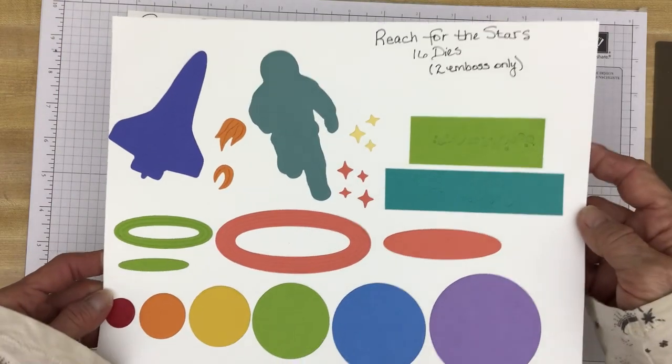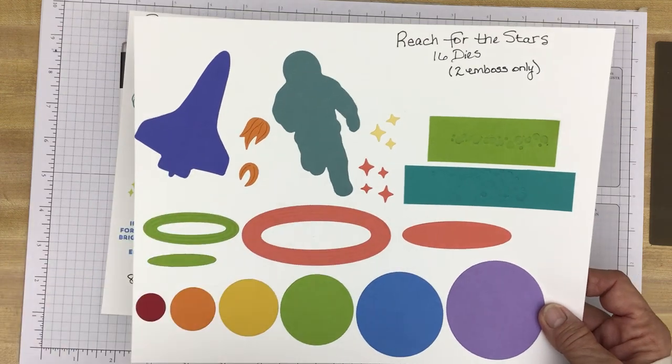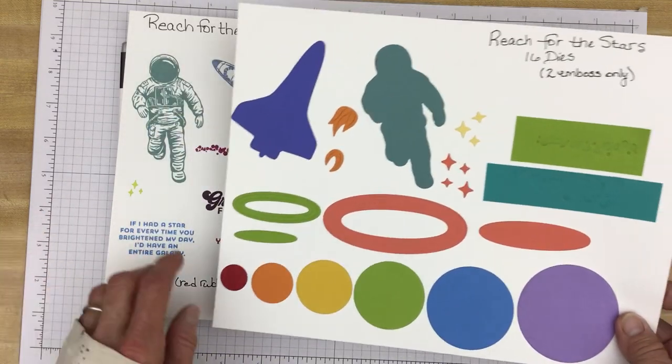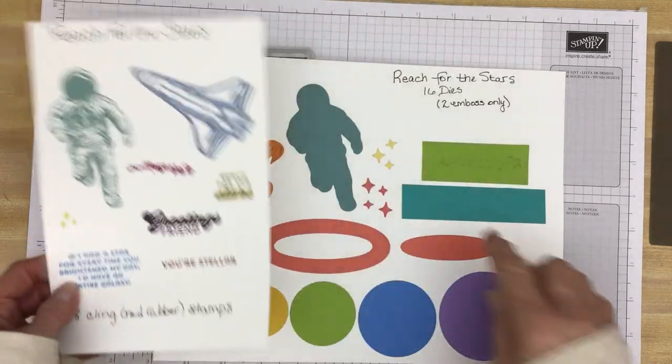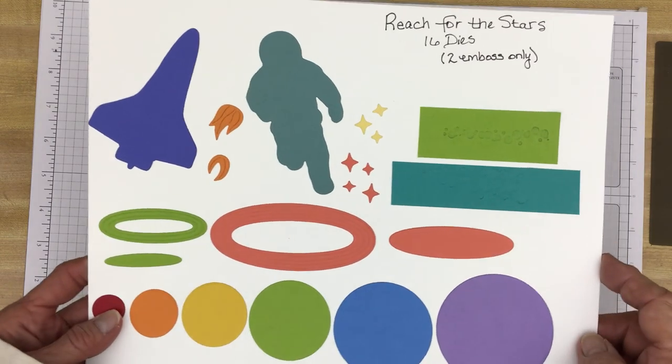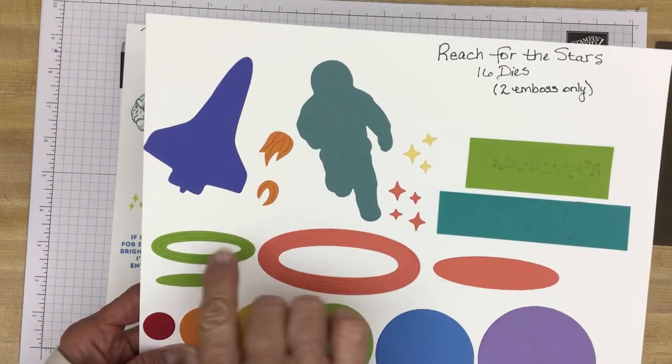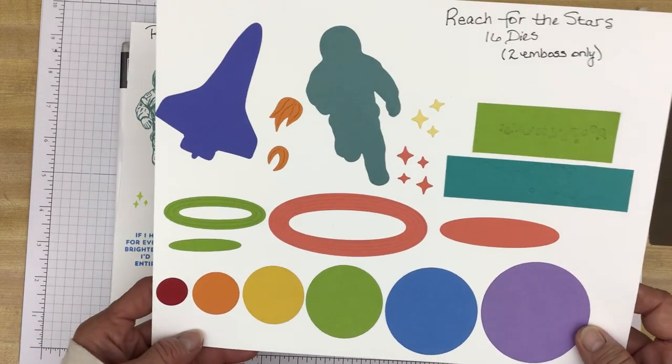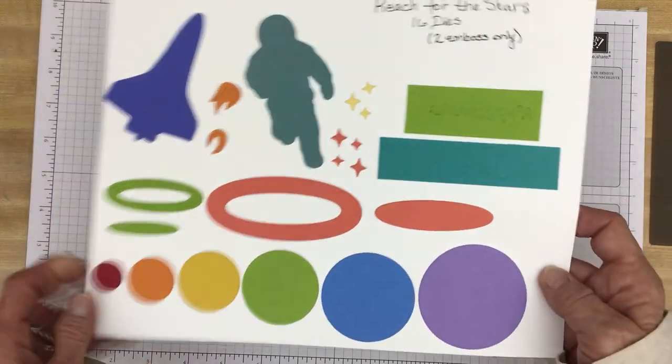And then here are the dies. And as I said, you can cut out the spacecraft, the astronaut, and then there are some flames that you can use for this spacecraft. And then there are little stars but they are solid dies as opposed to being able to cut these out. So these are just stars you could cut out for embellishments. And then there are these two dies that cut out rings for the planets. And then these are the interior part. This one I would use maybe to put a sentiment on. This one's a bit small but you might be able to use it for something. And then there are six circle dies in various sizes. They're basically like layering dies. And you can use them to cut out the planets.